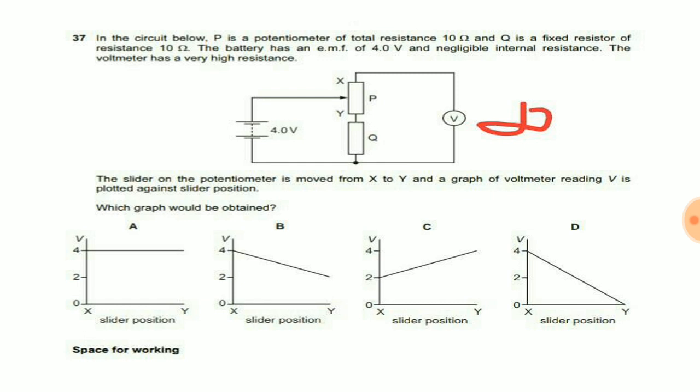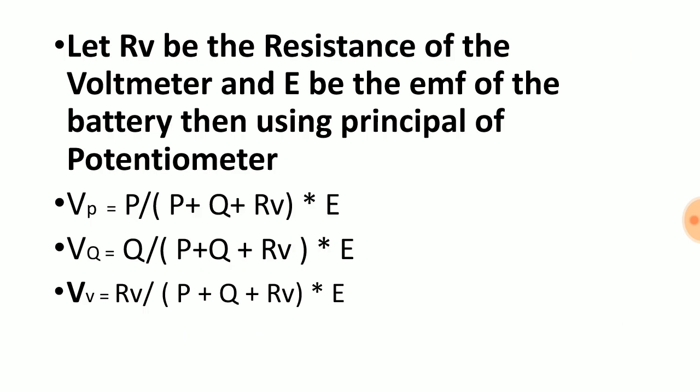Now using the principle of potential divider, we know that if Rv be the resistance of the voltmeter and E be the emf of the battery, that is 4 volts, then in order to find the voltage across P, we will be using this formula.